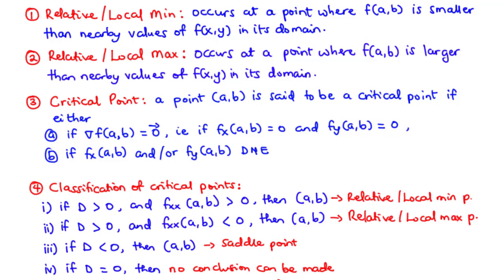In this lesson, we are going to learn how to find the relative or local minimum and maximum of multivariable functions. The relative or local minimum occurs at a point where the value of the function is smaller than nearby values of the function in its domain. The relative or local maximum occurs at a point where the value of the function is larger than nearby values of the function in its domain.